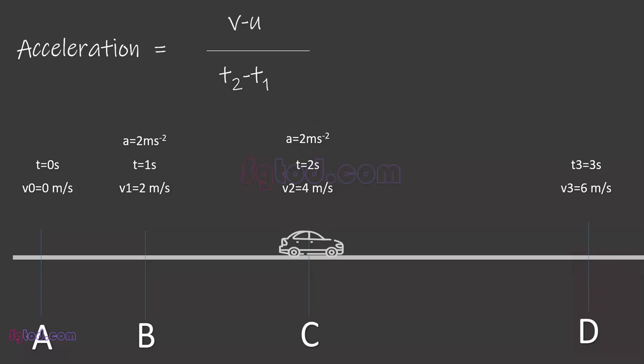In the same way, we can compute the acceleration from time t equals 2 seconds to t equals 3 seconds and get the acceleration to be 2 meters per square second.